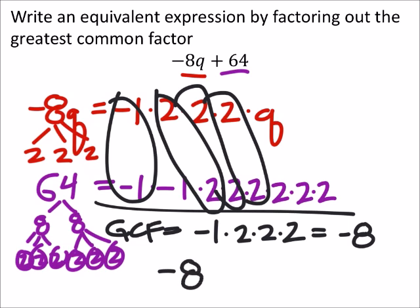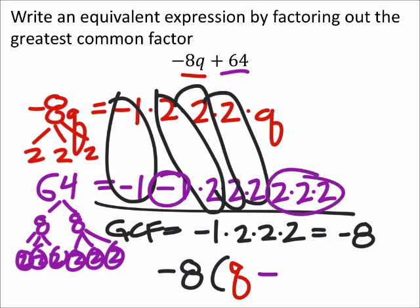So we've got the expression will be negative 8, and what's left over from the red, a q. And what's left over from the purple, I've got a negative 1 times 2 times 2 times 2. That would be a negative 8.